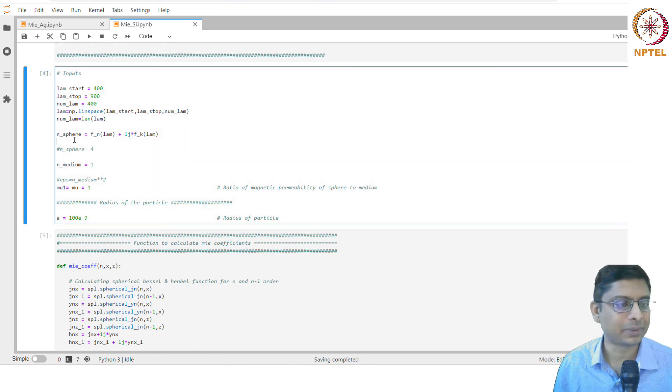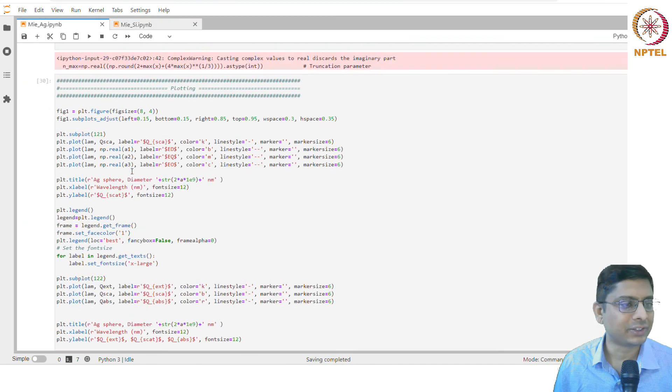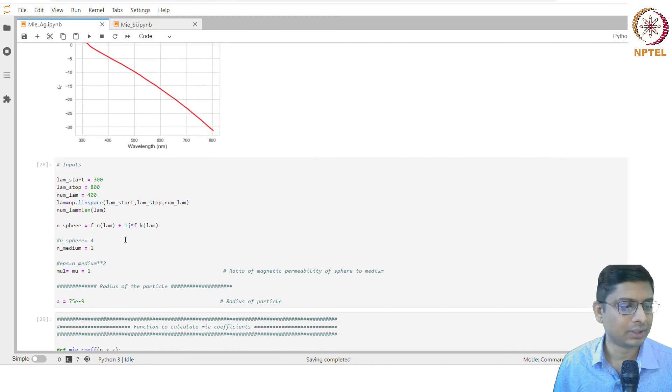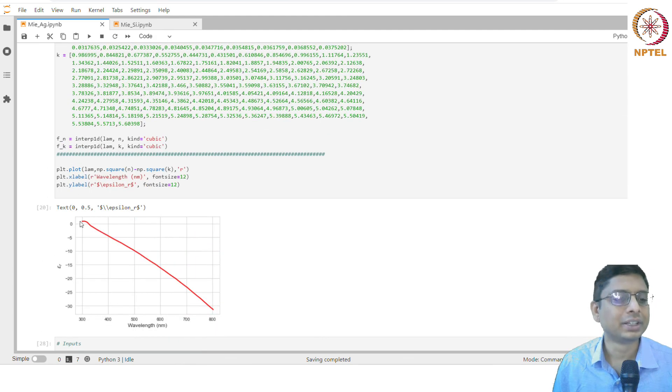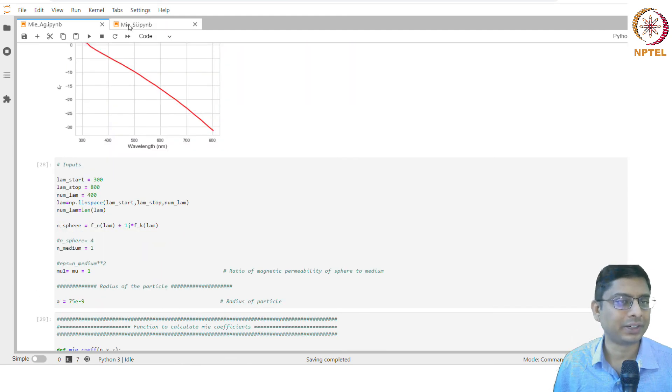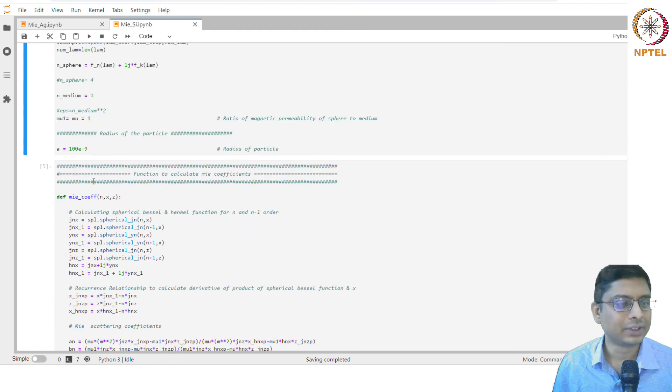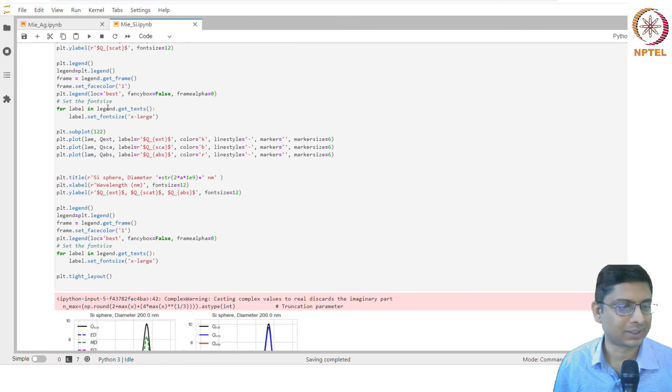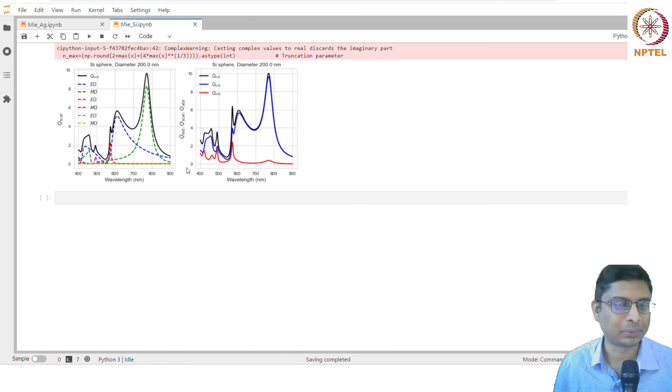The sphere will be different. In the previous case we essentially took the data and created an interpolation function, then used that to generate the refractive indices. You have this and that's it. The same code will calculate. In this case you'll see a little bit more interesting features in the scattering and extinction cross sections.